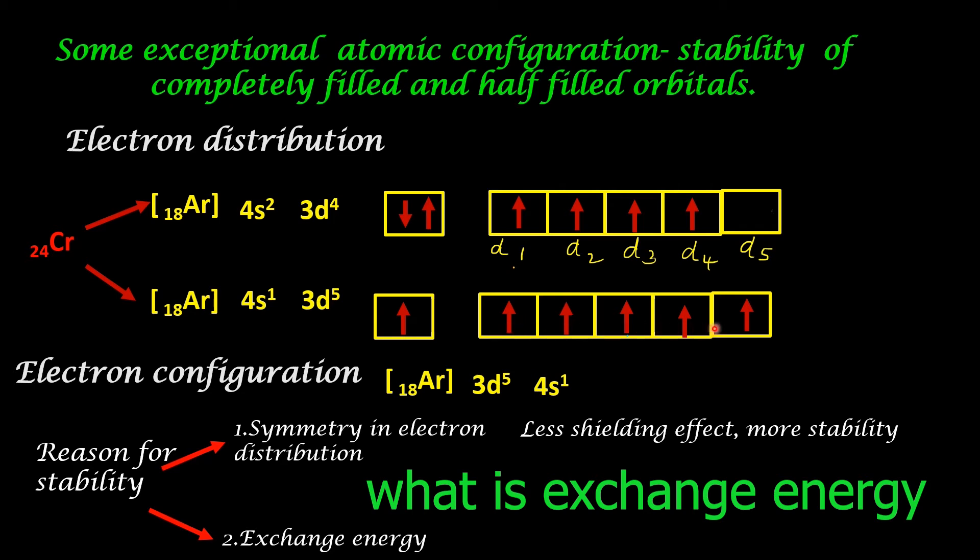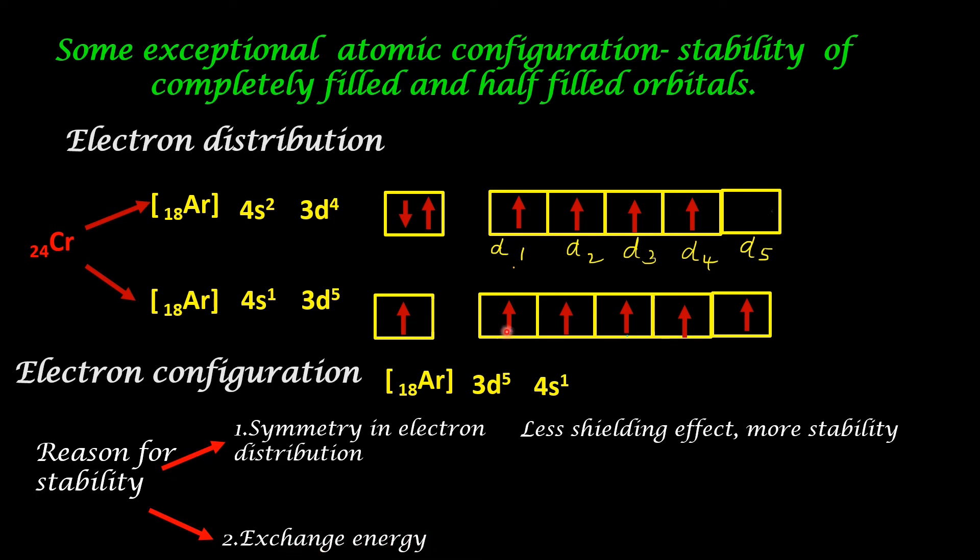The electrons in the degenerate orbitals can exchange their position with other electrons in the degenerate orbitals. During each exchange, some amount of energy is lost by the electron. The energy that is lost in this manner is called exchange energy. The exchange energy depends upon the total number of exchanges possible.